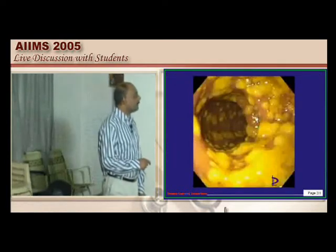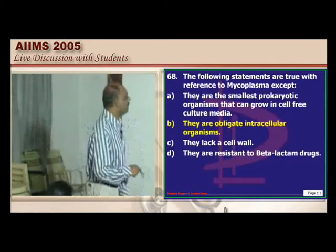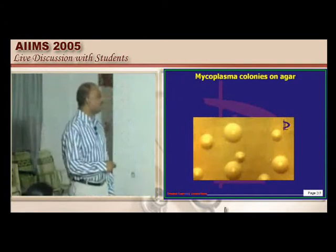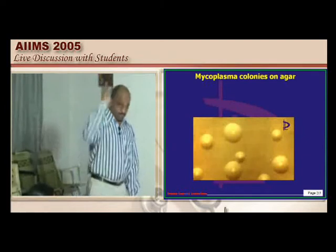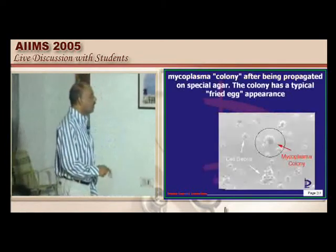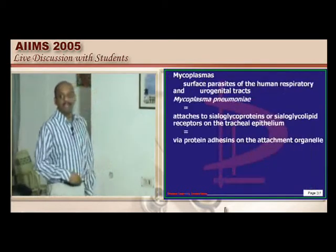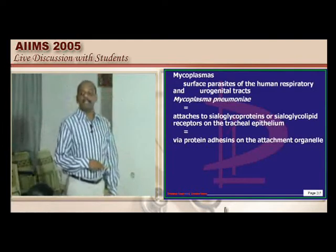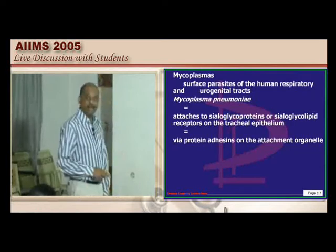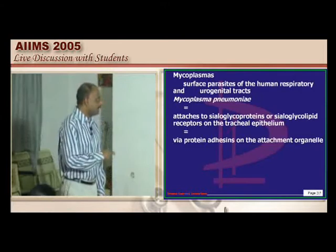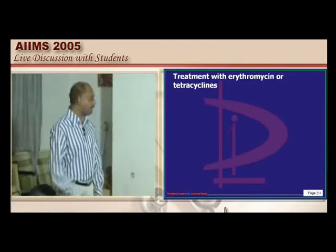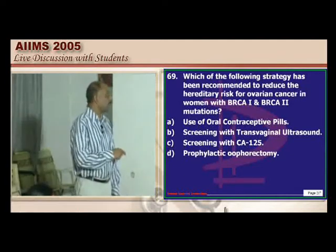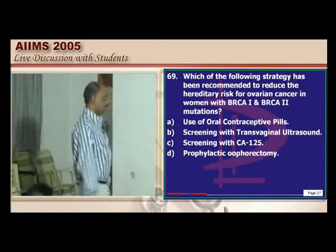ALL patient with neutropenia developing diarrhea after amoxicillin — answer is pseudomembranous colitis caused by Clostridium difficile, identified by endoscopy. Mycoplasma is not an obligate intracellular organism like Listeria; it grows on agar with a classic fried-egg appearance. Mycoplasma are surface parasites homing on the respiratory and urogenital tract, attaching to sialoglycoproteins on the tracheal epithelium. They are not vulnerable to regular antibiotics; erythromycin and tetracycline are the treatment of choice.